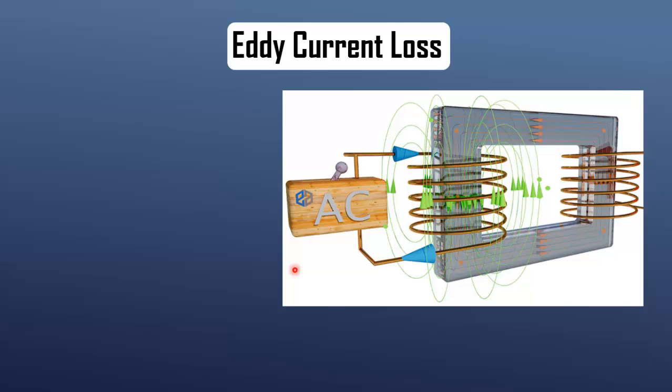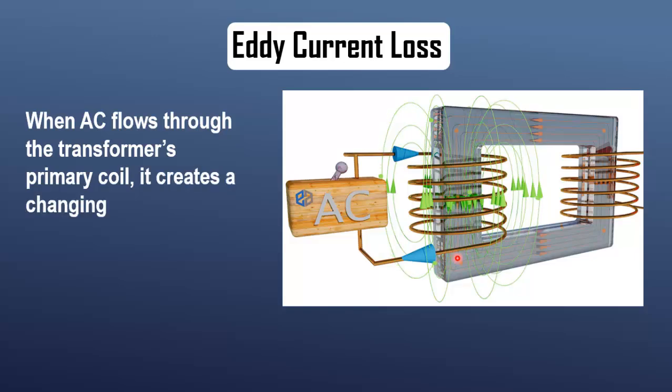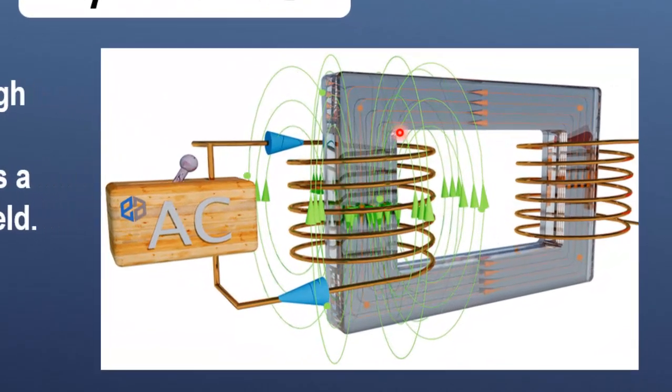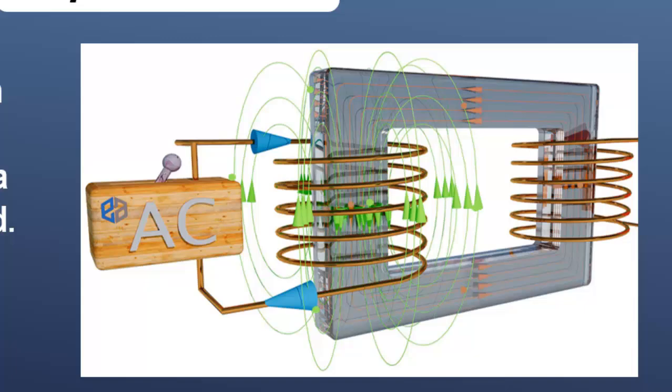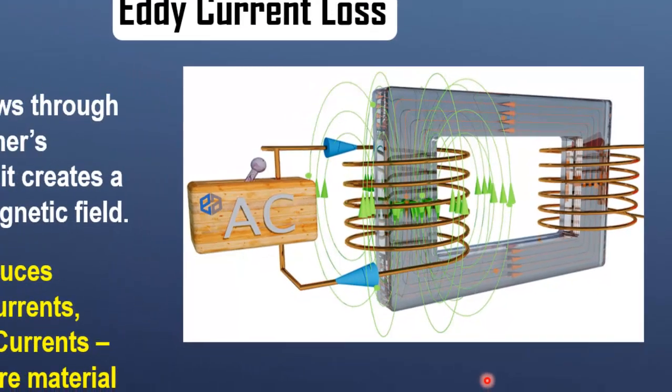Let's start with eddy current loss. When AC passes through a transformer's primary coil, it creates a changing magnetic field. This changing field induces circulating currents within the transformer core. These are the eddy currents.